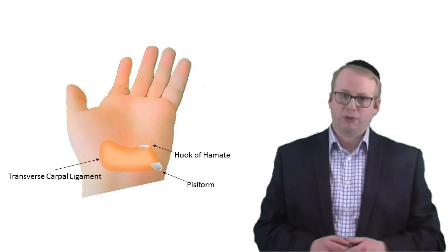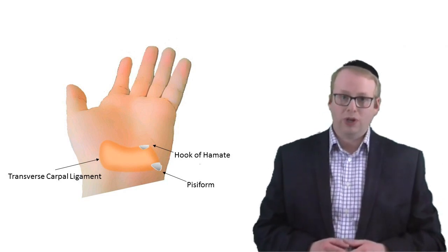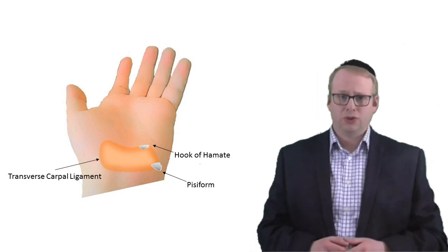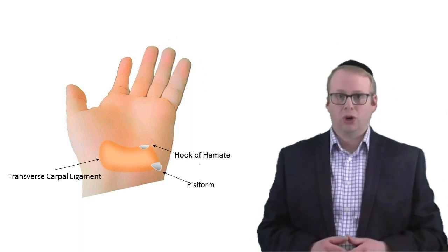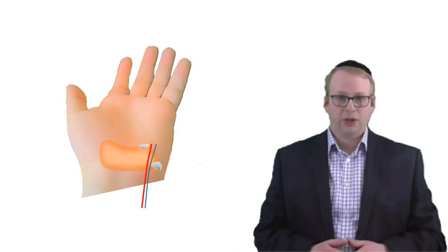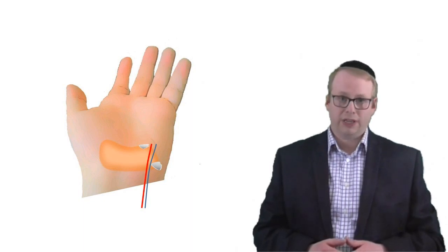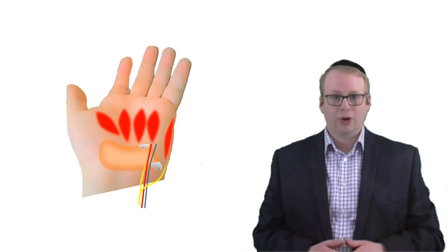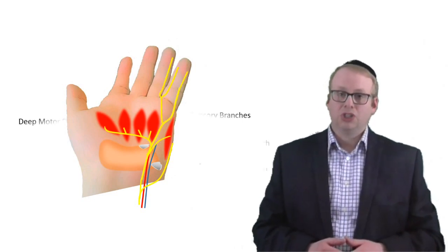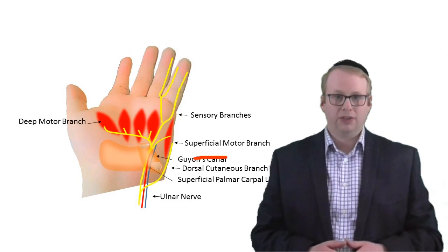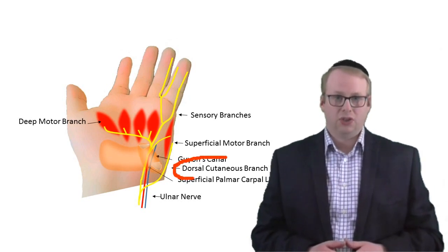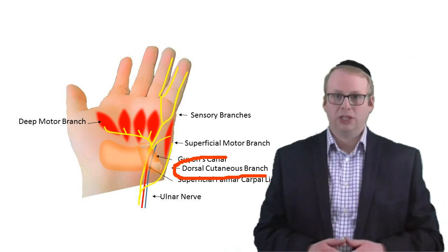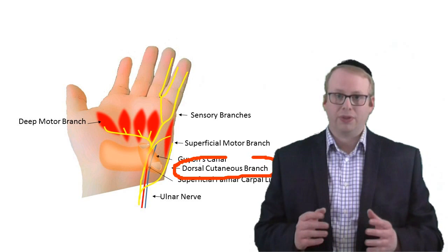Let's first understand the anatomy. The ulnar tunnel is a small channel around 4cm long at the wrist. The floor is formed by the transverse carpal ligament, and the entrance by two bony protrusions from the carpal bones beneath, called the hook of hamate and the pisiform bones. A couple of blood vessels also run through this area, called the ulnar artery and the ulnar vein. The ulnar nerve joins this crowded space running through this tunnel, and just before it does, it sends a branch to the back of the hand called the dorsal ulnar cutaneous nerve, which can help us work out exactly where the lesion of the ulnar nerve may be occurring.